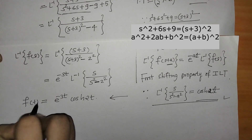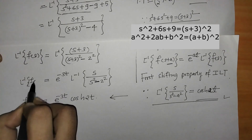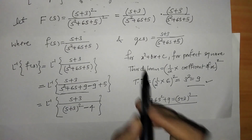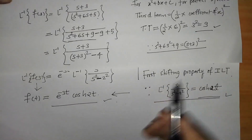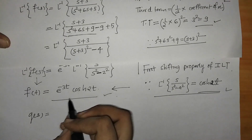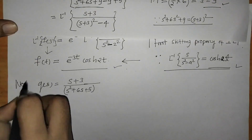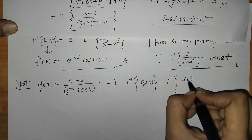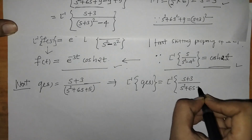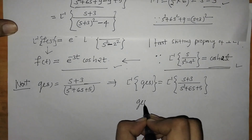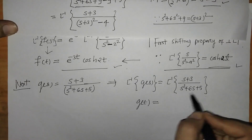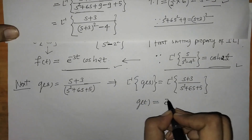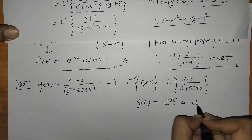Now we have found L inverse of f(s), and we call this f(t) = e^{−3t} cosh(2t). Since g(s) is the same as f(s), we have g(t) = e^{−3t} cosh(2t). In this way we have found both f(t) and g(t).